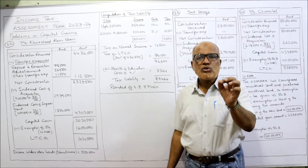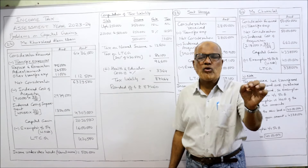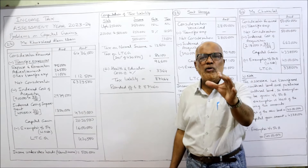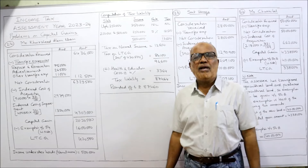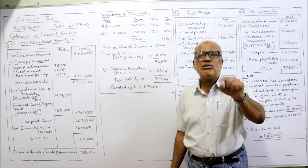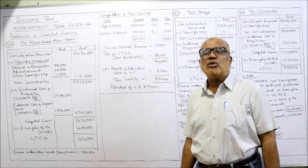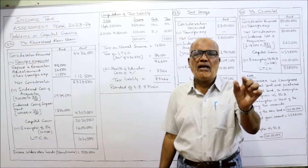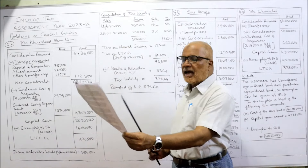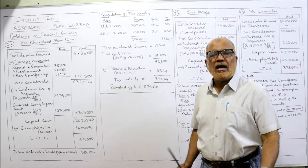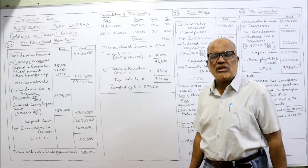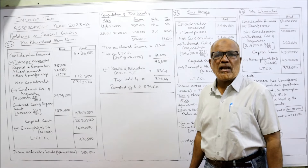From the capital gain we deduct exemption under section 54, because Hurshid Alam Khan sold one house property and purchased another residential house within the stipulated period. Exemption is allowed for the amount spent on purchasing the new house plus the amount deposited in the Capital Gain Account Scheme. The cost of the new house is Rs. 15,00,000 and Rs. 1,00,000 was deposited in the Capital Gain Account Scheme, totalling Rs. 16,00,000.